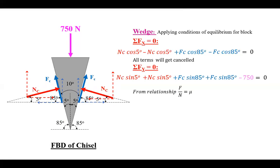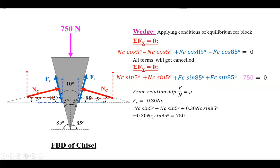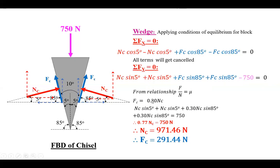Simplifying: since the coefficient of friction is 0.3, Fc equals 0.3 Nc. Substituting into the sigma Fy equation gives: Nc sin 5° + Nc sin 5° + 0.3 Nc sin 85° + 0.3 Nc sin 85° = 750. All four terms are in terms of Nc. Upon simplification, 0.77 Nc equals 750, therefore Nc equals 971.46 newtons.